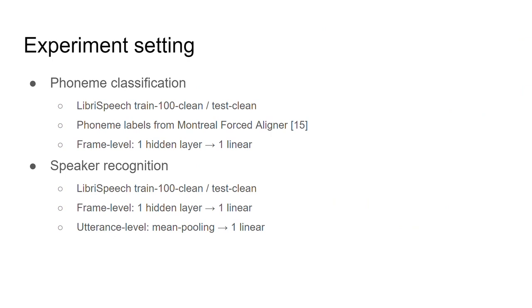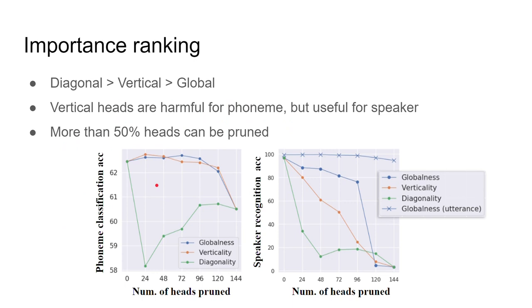We conduct two downstream tasks to evaluate representations: phoneme classification and speaker recognition. Both are trained on LibriSpeech train-100-clean subset and tested on test-clean subset. Phoneme labels are obtained from Montreal forced aligner. Phoneme classification is conducted at frame level with one hidden layer MLP, and speaker recognition is conducted at frame and utterance level MLP. Typically, we only need to recognize speakers given the entire utterance. However, we are also interested in how much speaker information can be encoded in each single frame, given that we pre-trained Mockingjay by reconstruction loss, which prefers encoding as many details as possible, and the self-attention mechanism can entangle the whole sequence of information into a single frame.